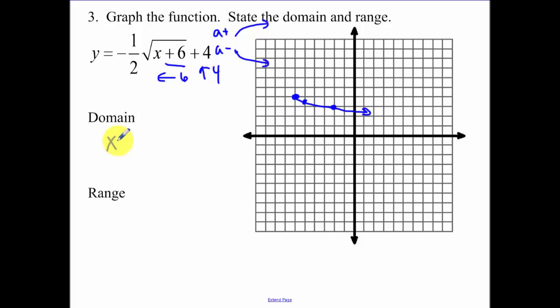Compressing your y's by 1 half. So your domain, x is greater than or equal to negative 6. Because I'm going this direction. Now I'm going down, so y's are going to be less than or equal to our positive 4.